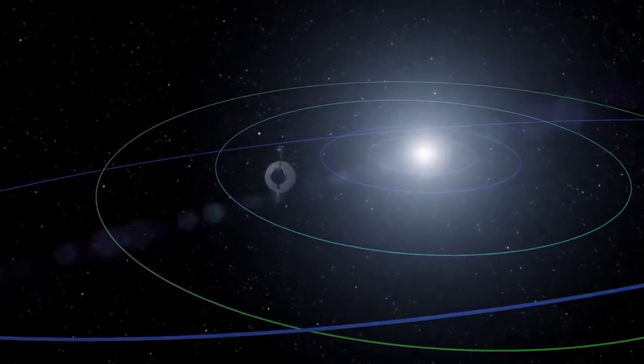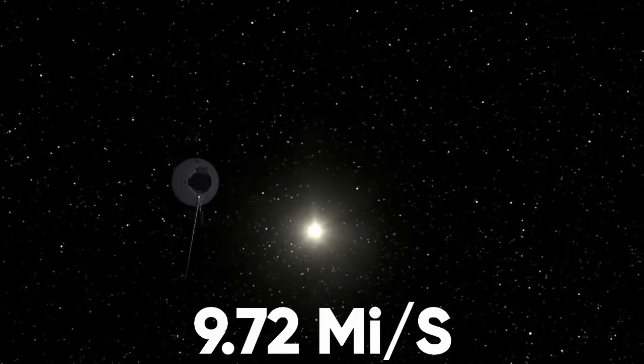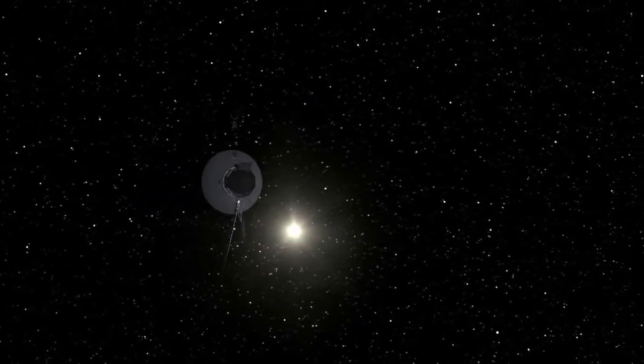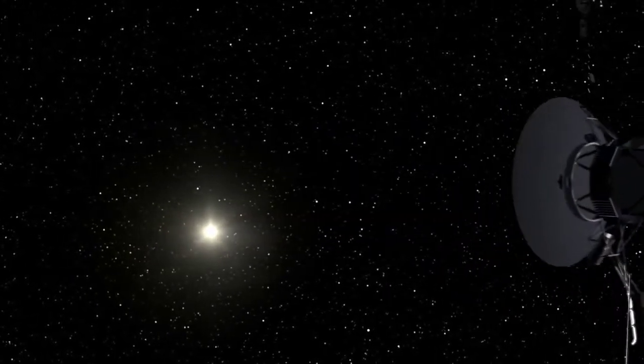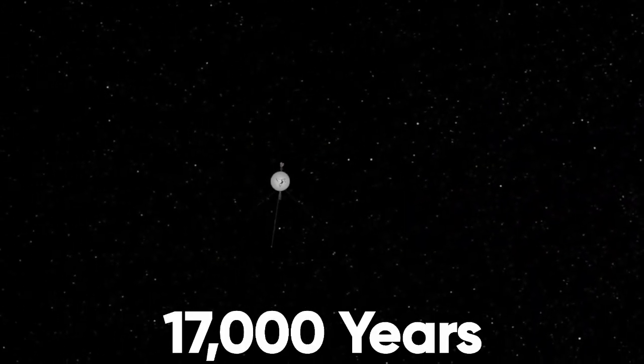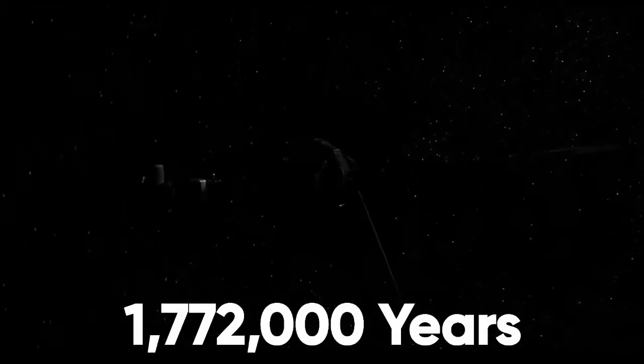The Voyager 1 is traveling through space at a speed of 35,000 miles per hour or 9.72 miles per second. By 2030, it would stop transmitting back to Earth, and at this speed, it will reach a light year in 17,000 years, reach the distance equivalence of Proxima Centauri in 40,000 years, and reach 100 light years in 1.7 million years. So it may take a really long time for any alien civilization to come across the spacecraft.